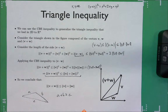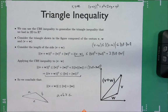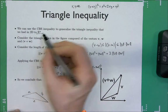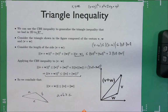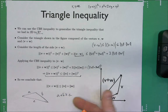This proof works for triangles in any dimension — triangles living in R^n, even in a thousand dimensions. The triangle inequality is still true. Some basic things put together give a nice result — that's what's very cool about mathematics.